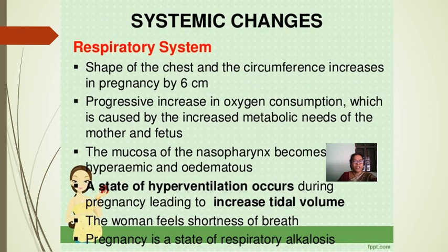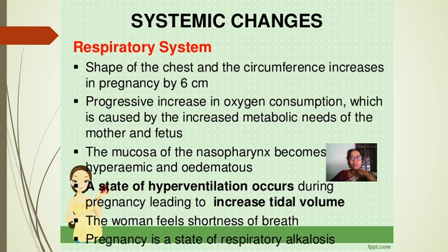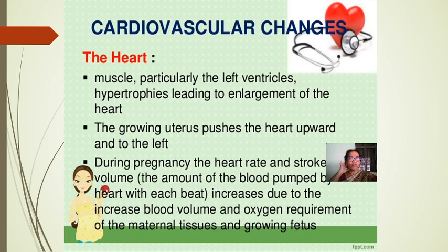Calcium metabolism and locomotor system: relaxation of pelvic ligaments and muscles occurs due to estrogen and relaxin, maximum during the last weeks of pregnancy. Increased lumbar lordosis develops in later months due to the enlarged uterus, causing backache and waddling gait. Respiratory system: the chest circumference increases by 6 cm. Progressive increase in oxygen consumption occurs due to metabolic needs of mother and fetus. The nasal mucosa becomes hyperemic, a state of hyperventilation occurs, tidal volume increases, and pregnancy is a state of respiratory alkalosis.